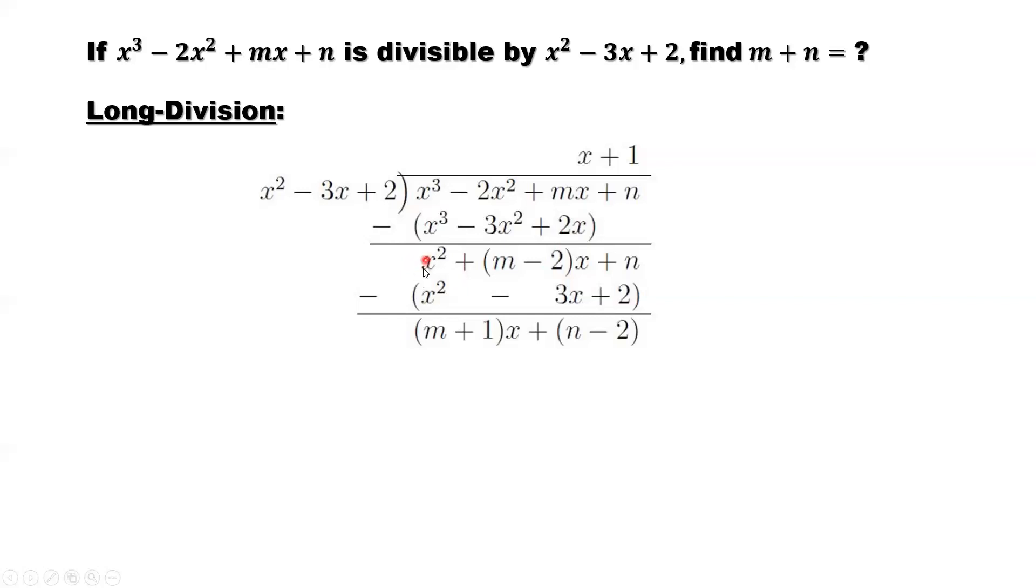The constant here is 1. So put the 1 here. 1 times x squared is x squared. 1 times negative 3x, negative 3x. 1 times 2, that's 2. Then you have m minus 2, minus minus 3, that's plus 3. Plus 3 minus 2 is m plus 1. That's plus 1 here. n minus 2. Here's minus 2.